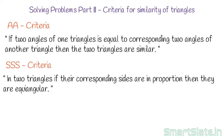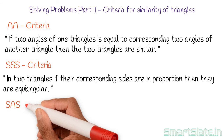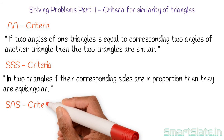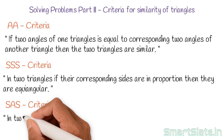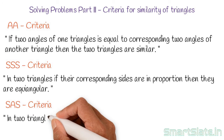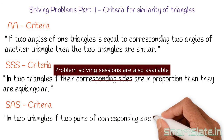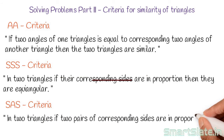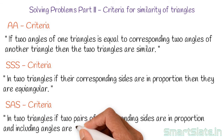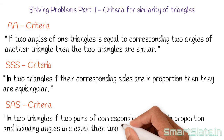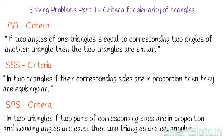The third criteria is Side-Angle-Side, or SAS criteria. It states: in two triangles, if two pairs of corresponding sides are in proportion and the included angles of the two triangles are equal, then the two triangles are equi-angular. Remember, equi-angular triangles are similar triangles.